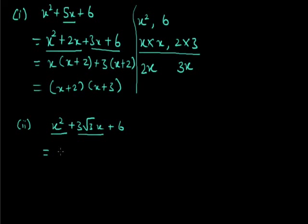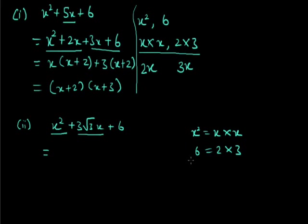In this question the three terms are already arranged in proper order. The first term is x² with factors x×x, and the last term is 6 with factors 2×3. We need to combine these factors to get the middle term 3√3x. Both terms must contain x, so that their sum gives 3√3x and their product gives 6x².